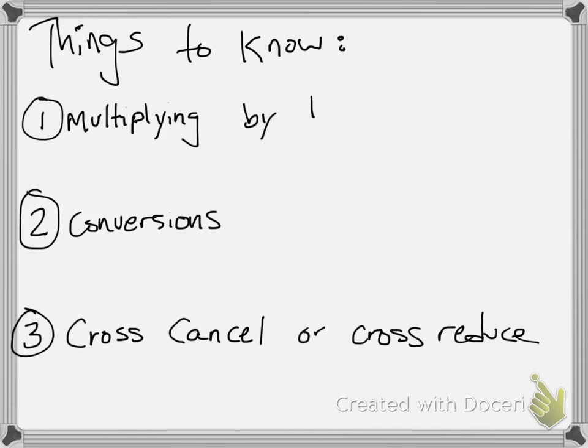There's a couple things that we need to know before we get into converting unit rates, and we'll break these down. The first one is multiplying by 1 in a few different forms. The second one is conversions. And lastly, we need to know that we can cross-cancel or cross-reduce, same like we've been doing in fractions.